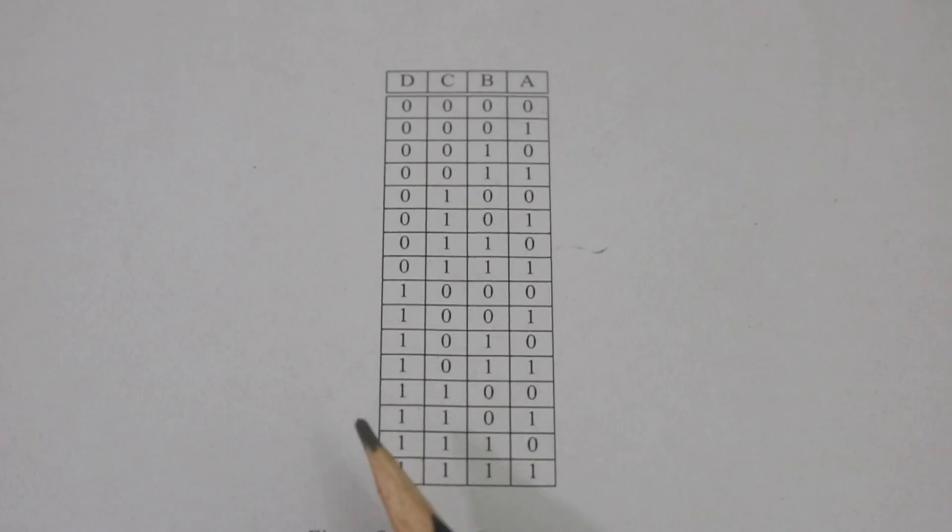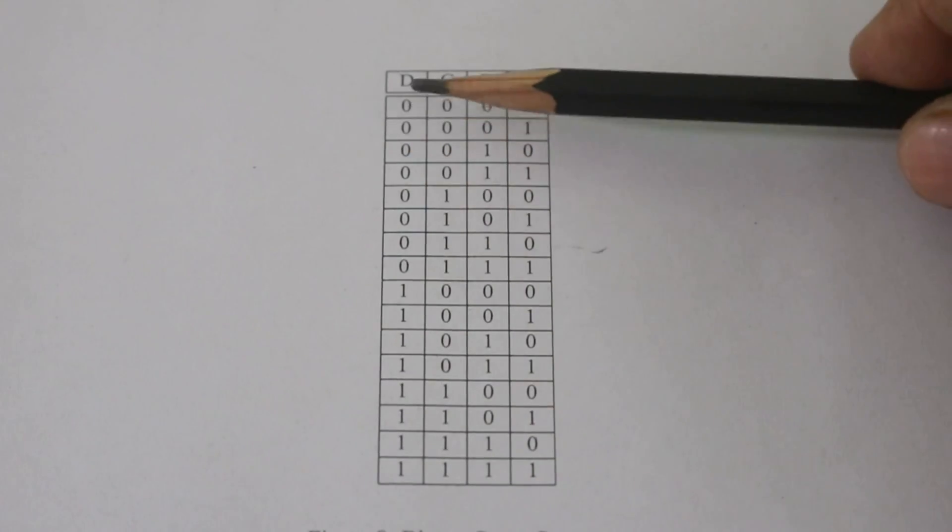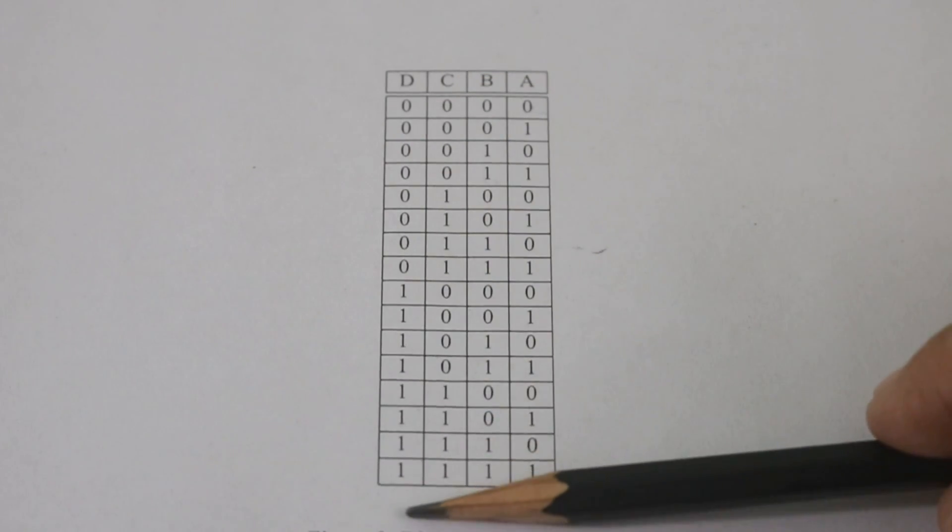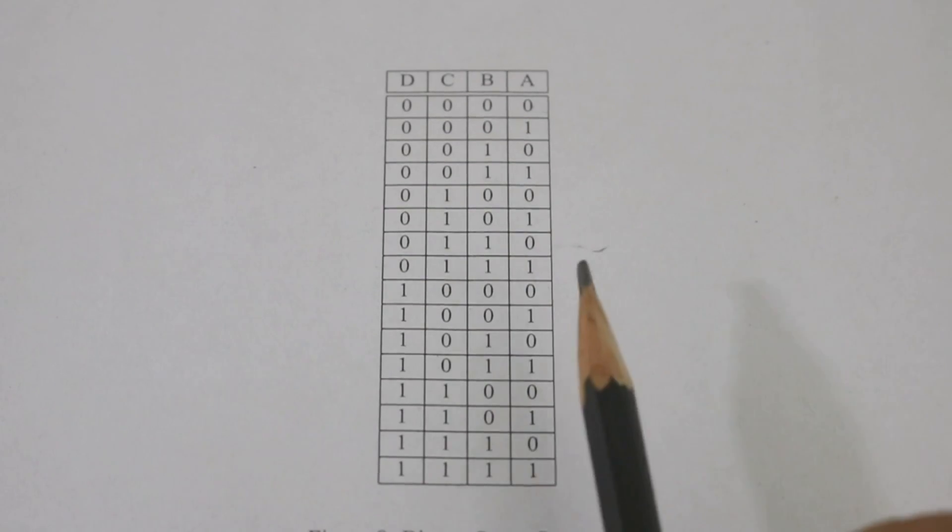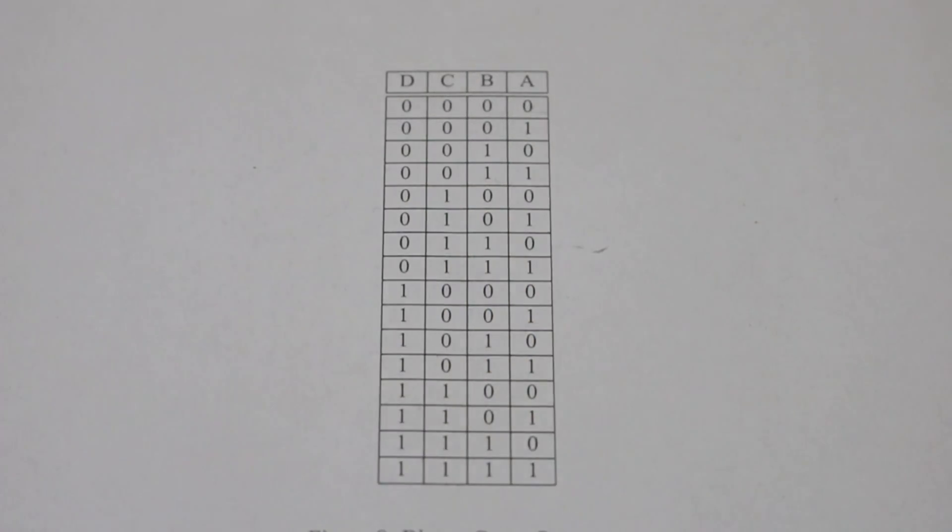And finally, in the first column D, you have 8 0s, 8 1s. So the frequency is halved as you move to the columns to the left.